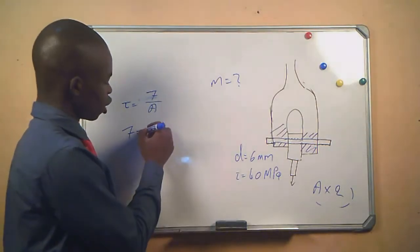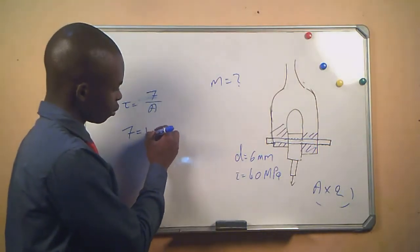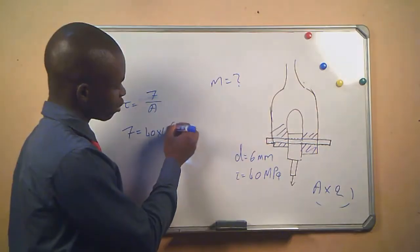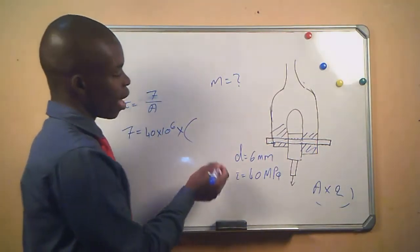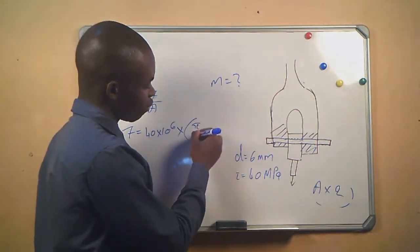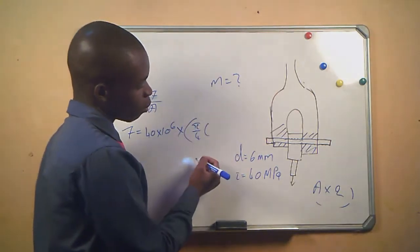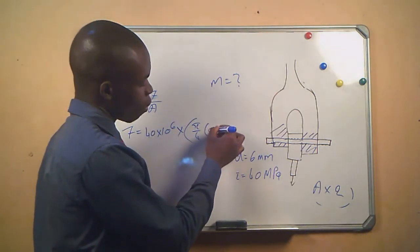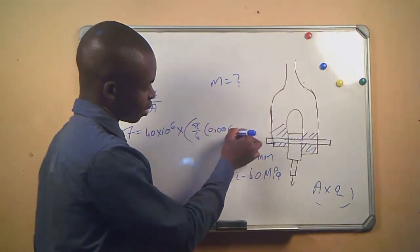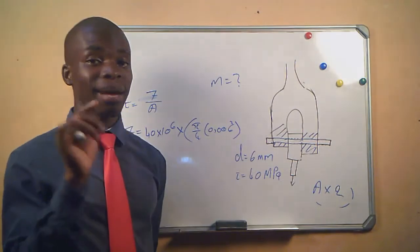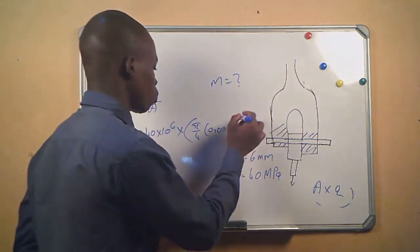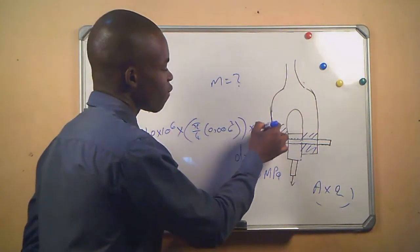We have the shear stress, it's 40 times 10 to the power 6, that's mega, times the area. What is the area? Our area equals π/4 and then the diameter is 0.006 squared, but what did we say? We said the area must be times 2 because our device will shear in two areas.